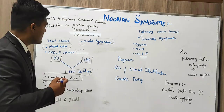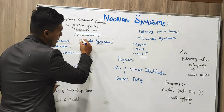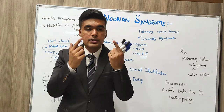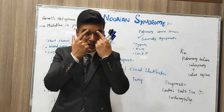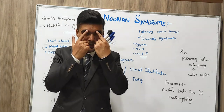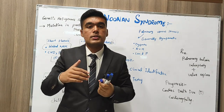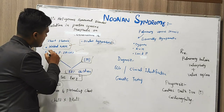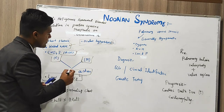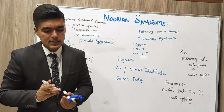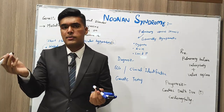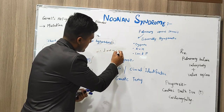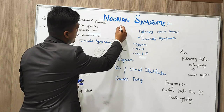A patient approaching us is having short stature and ocular hypertelorism, meaning there is an increase in distance between the eyes. This is ocular hypertelorism, as well as heart anomalies, webbed neck, congenital heart disease, and pulmonary stenosis. The incidence of this disease is 1 in every 1,000 to 2,500 patients — there is 1 case of Noonan syndrome.